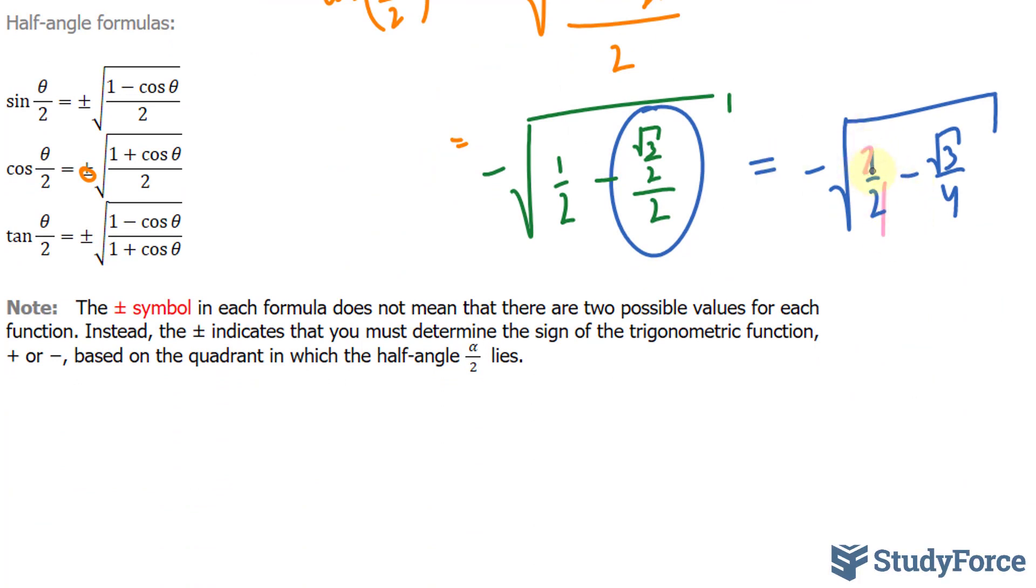This becomes a 4. This becomes a 2. And so we have the square root of 2 minus the square root of 3 over 4.